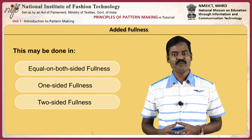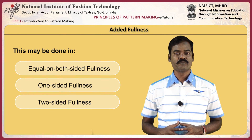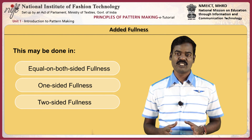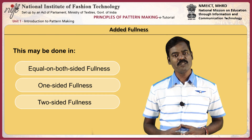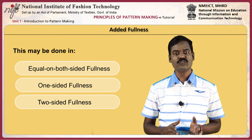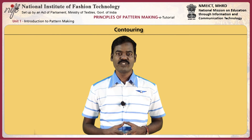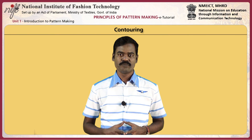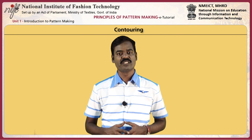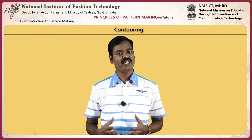The principle of added fullness is useful when more fullness is required in a garment than the required design purpose, for example, circular skirts and ruffles. This may be done as equal fullness on both sides, one-sided fullness, or two-sided fullness. The principle of contouring is used when a close-fitted garment is required. Darts are shaped instead of being straight to get the body shape, and excess amount is removed where required. It requires more skill than the other principles.